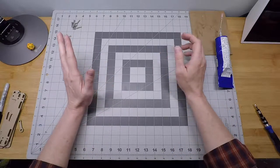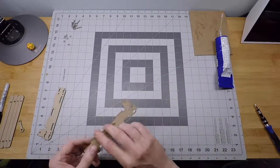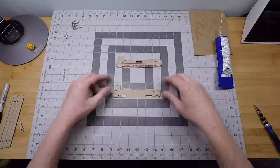Alright, in this step we're going to put together the rail assemblies. So the parts you'll need are the rail frames, which are these two parts, pretty distinct.